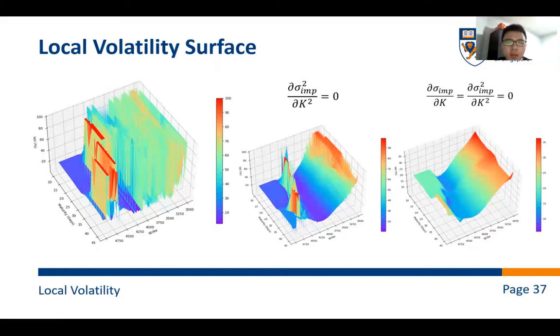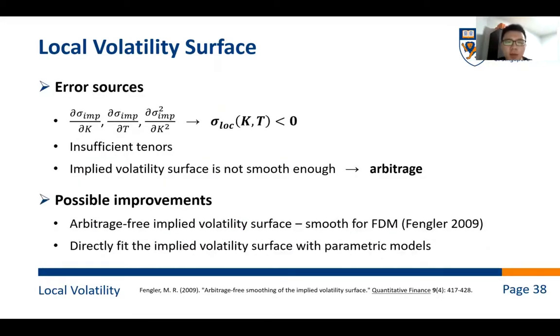To be honest, the shape of the local volatility surface of SP500 options is not satisfactory. For this reason, we summarize the following possible error sources and improvement methods. Although the implied volatility surface looks okay, the calculated partial derivatives still fluctuate a lot. And negative local volatility could even be obtained at some degrees. For this reason, insufficient tenors might be one of the reasons because the option data of different expiration dates is limited. The construction of the surface depends on interpolation to a large extent. The most severe problem is that the calculated implied volatility surfaces are not smooth enough, which directly influences the result of partial derivatives and local volatilities.